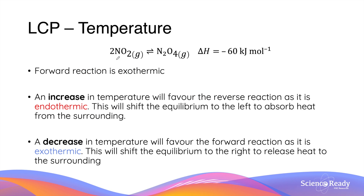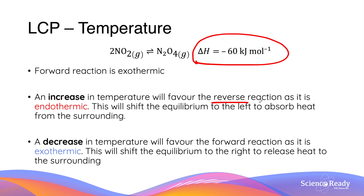The reversible reaction between nitrogen dioxide and N₂O₄ is an exothermic one. So an increase in temperature will favour the reverse reaction as it is endothermic. In other words, this will shift the equilibrium to the left side in order to absorb heat from the surroundings, meaning the concentration of NO₂ increases while the concentration of N₂O₄ decreases.